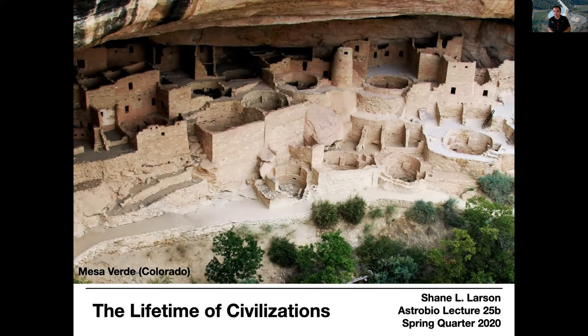One of the things we'll do to talk about the lifetime of civilizations is look at some examples here on Earth. The cover slide shows Mesa Verde in Colorado — the remains of one of the ancient Puebloan civilization sites. There are several throughout the area: a big one at Taos, one in Chaco Canyon, and this one in Mesa Verde. These are the ancestors of the Puebloans that live in the area still today. This civilization, like many civilizations in the ancient world, collapsed.